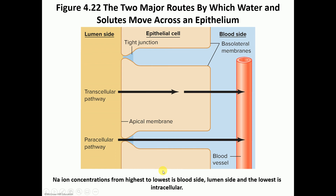Sodium concentration varies by compartment. From highest to lowest: extracellular fluid has the most sodium, followed by the lumen side, and the least sodium is found intracellularly. This distribution is important since sodium plays a critical role in many physiological processes, and this concludes Chapter 4.